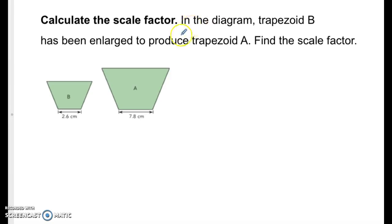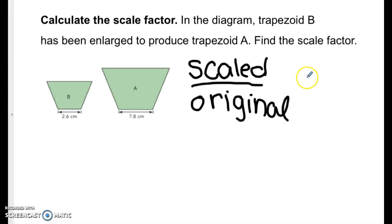To find scale factor we want to do the scaled over the original. We started with trapezoid B so trapezoid B is our original so that means 2.6 goes on the bottom and trapezoid A is our scaled so 7.8 goes on the top. Then we have to simplify so 7.8 divided by 2.6 is 3, so our scale factor is 3.